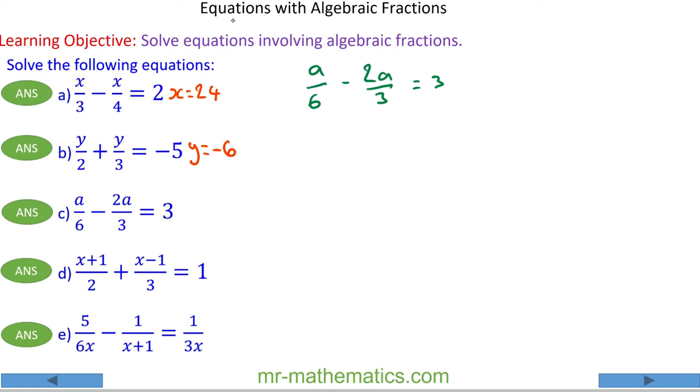In this case I'm going to multiply this fraction by 2 because 3 is a factor of 6, so that gives me a over 6 minus 4a over 6 is equal to 3. The reason why I've done this is because I can now write it as a minus 4a all over 6 is equal to 3.